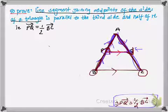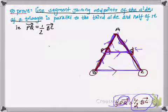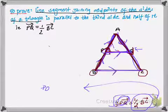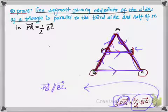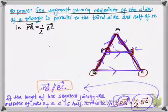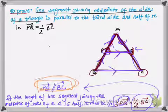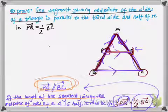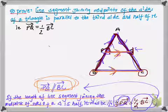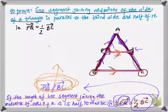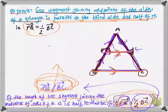Since vector PQ equals one half of vector BC, the line segment joining the midpoints of the triangle — line segment PQ — is half the third side in magnitude. From this we can also conclude that PQ must be parallel to BC, because if a line segment joining the midpoints is half in magnitude to the third side, these two sides must be parallel. So we have proved that PQ is parallel to BC and PQ equals one half of BC.